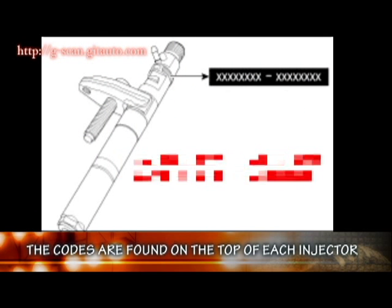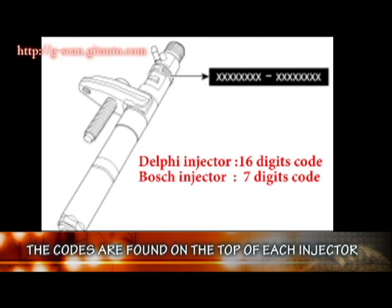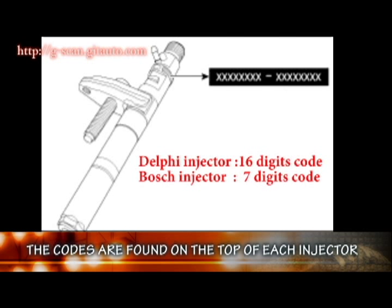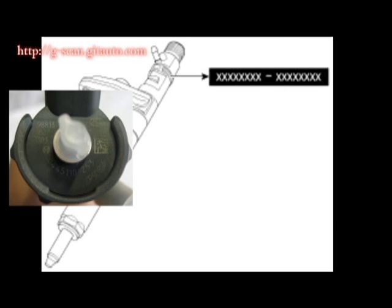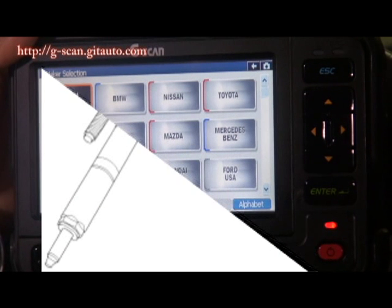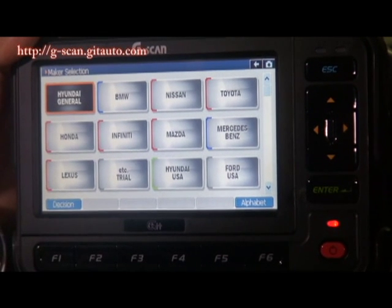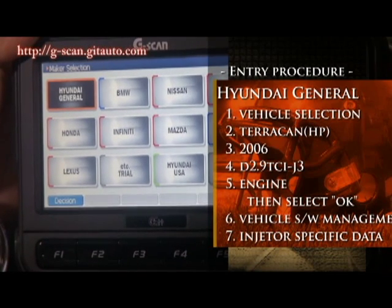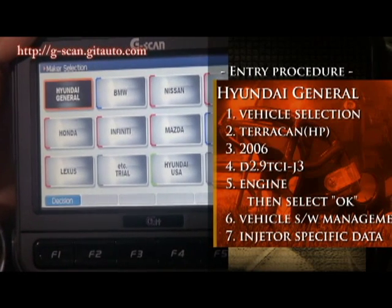Injector specific data or code is very important because it includes the fuel collection information. The injector code is found on the top of each injector. You have to note the codes before mounting the injector in place.